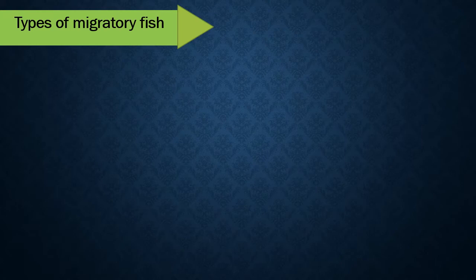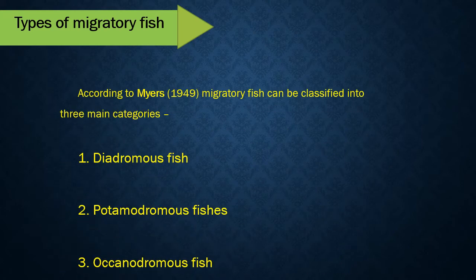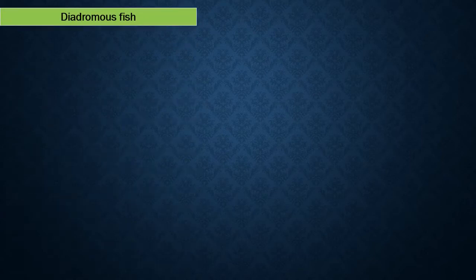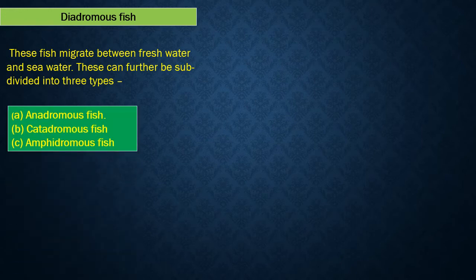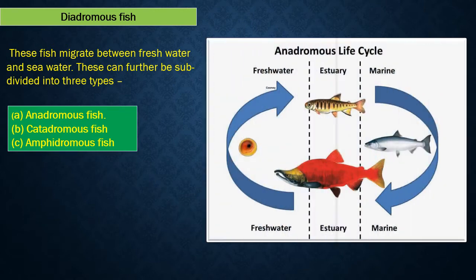Types of migratory fish. According to Myers in 1949, migratory fish can be classified into three main categories: number one, diadromous; number two, potamodromous; and number three, oceanodromous fish. Diadromous fish migrate between freshwater and seawater and can be further subdivided into three types: anadromous, catadromous, and amphidromous fish.